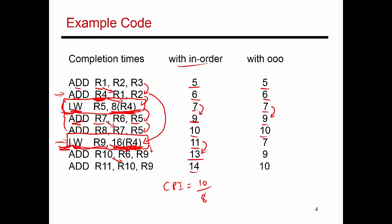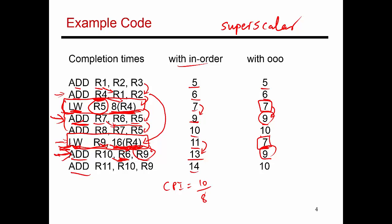Both loads depend on R4 but not on each other, so they can go through the pipeline together — this is superscalar execution, processing multiple instructions at the same time. Both loads finish in cycle 7. Once they finish, they wake up their dependent instructions in the issue queue. The first add was waiting for R5 and R6 — R5 is now ready, so it can execute. The second add was waiting for R9, which just got produced. So both add instructions leave the issue queue at the same time, execute together, and both finish in cycle 9. Then the same happens again — both remaining adds finish in cycle 10.